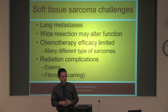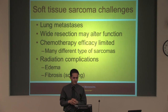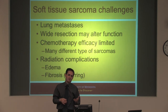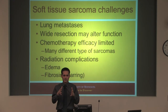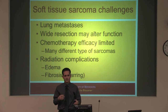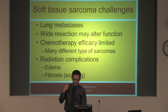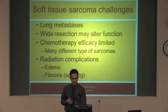One of the issues with sarcoma is lung metastases — if it spreads, that's where it's going to go. Wide resections may alter function. Chemotherapy is limited because, while there are 12,000 sarcomas per year, there are dozens of different types — making it really hard to determine what works in any one type. It's taken time to sort out what chemo works on what and how effective it is. Radiation complications are also among the challenges we deal with.